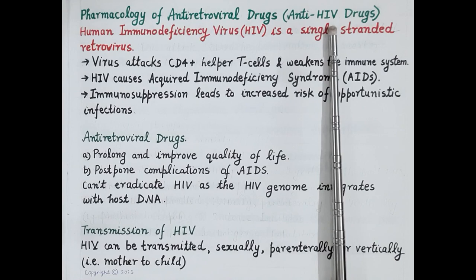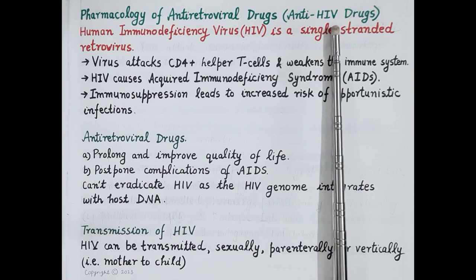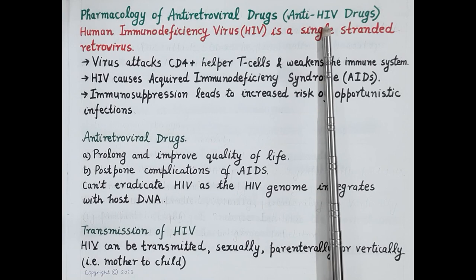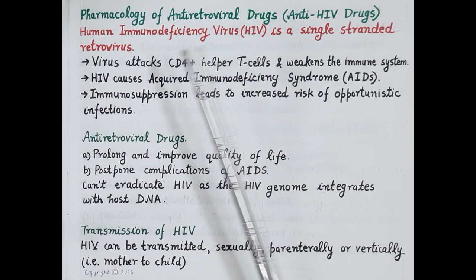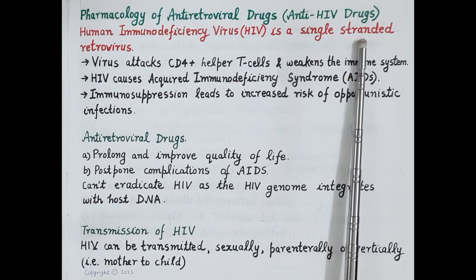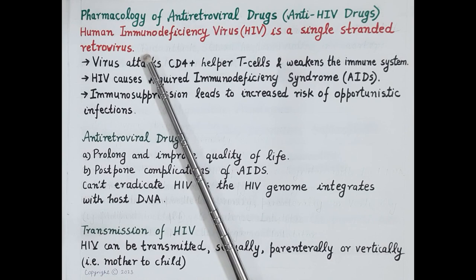Now here we should know what is HIV. HIV stands for human immunodeficiency virus because this virus reduces immunity of the body. It is a single-stranded RNA virus and it possesses an enzyme known as reverse transcriptase, and thus HIV is known as a retrovirus — a single-stranded retrovirus that reduces immunity of the body.